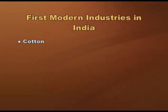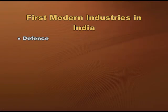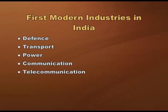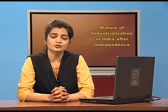The first modern industries in India were the cotton industry, jute, coal mines, and railways. After independence, the government took over important sectors of the economy including defence, transport, power, communication, telecommunication, mining, and other strategic projects. The strength of the public sector was supposed to be the backbone of the development of the Indian economy.